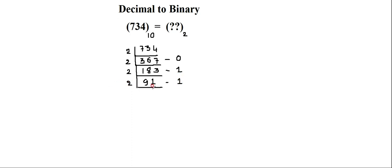Divide 91 by 2: 2×4 is 8, remainder is 1. Next consider 1: it becomes 11, 2×5 is 10, remainder is 1. So the quotient is 45. Next divide 45 by 2.